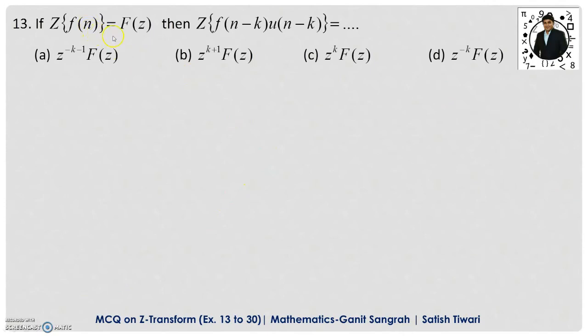If the Z-transformation of f(n) equals F(z), then the Z-transform of f(n−k)·u(n−k) equals what? This is nothing but the shifting theorem — we are shifting f(n) to the right. If you know the formula, that is well and good. The answer is option D, that is Z to the power minus k times F(z).